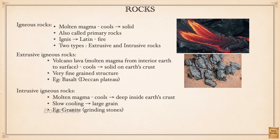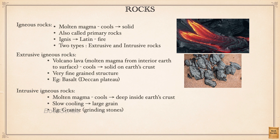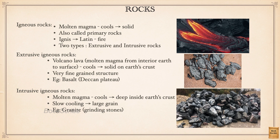Sometimes lava, instead of coming out onto the surface, cools down under the Earth's surface inside the Earth's crust itself. Since the temperature inside is pretty high, the cooling process will be slower, and because of this the grains will be bigger than the finely grained extrusive rocks. These are called intrusive igneous rocks — intrusive meaning internal or interior. The best example is granite, which is used for grinding spices and grains.